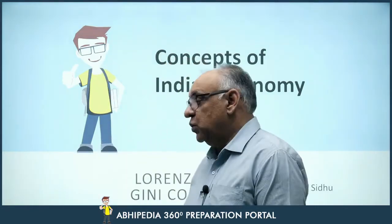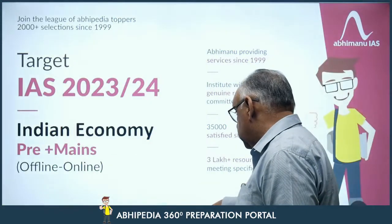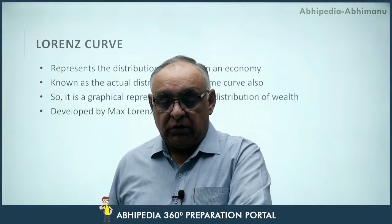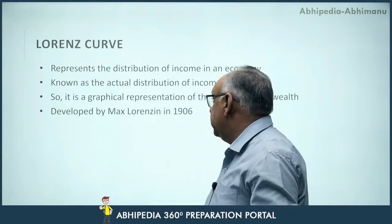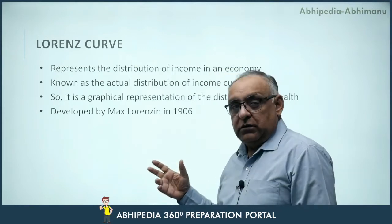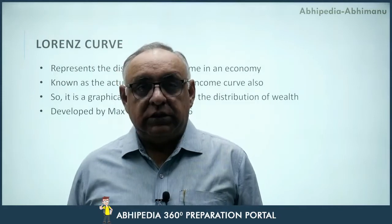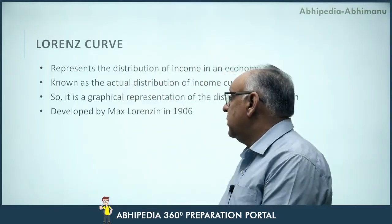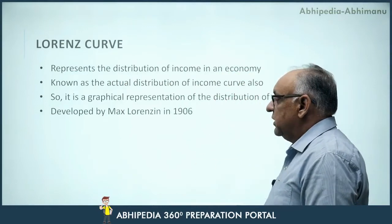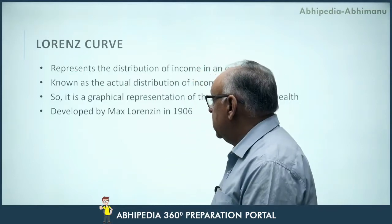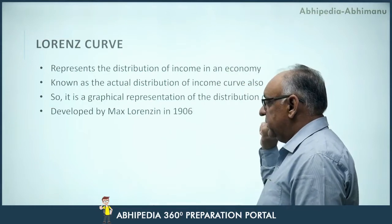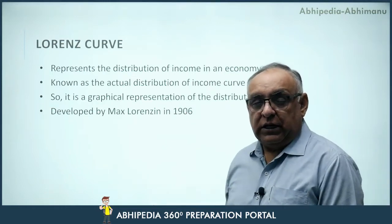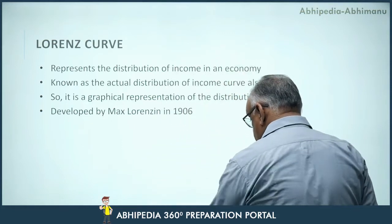So, we will discuss both the Lorenz Curve and the Gini Coefficient. The Lorenz Curve is basically a graphical measure which represents the distribution of income in society or in an economy. It shows how income and wealth is distributed in a society — it is known as the actual distribution of income curve. It is a graphical representation of distribution of wealth, developed by Max Lorenz in 1906.